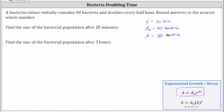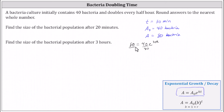To set up our equation: a is equal to 80, equals a sub zero which is 40, times e raised to the power of kt, or k times 30, which we can write as 30k. Now we need to solve for k. First step, we divide both sides by 40. When we divide both sides by 40, the left side is now two, giving us two equals e raised to the power of 30k.